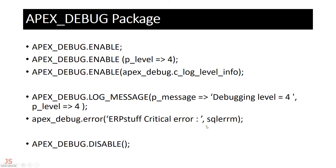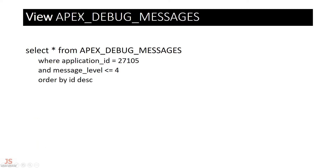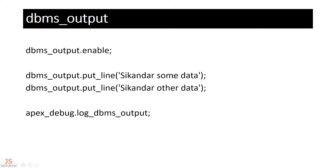There is a view called apex_debug_messages where all debugging messages are logged. This is a back-end view table. You can access those log messages by passing different parameters such as application ID, page number, message level, and session IDs.